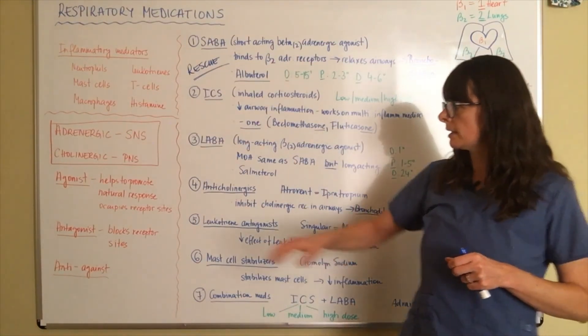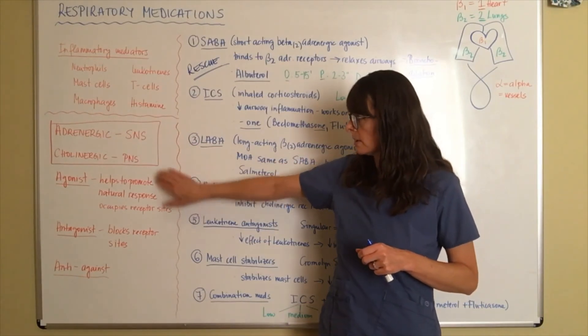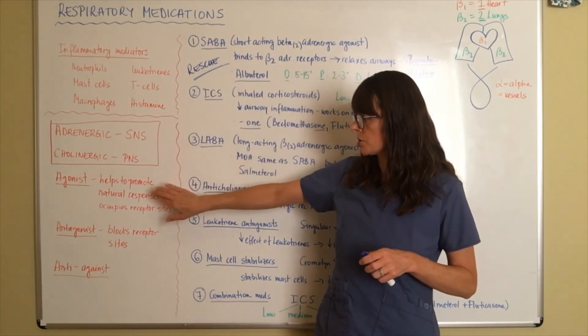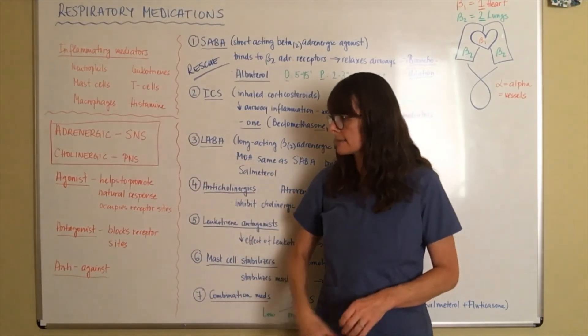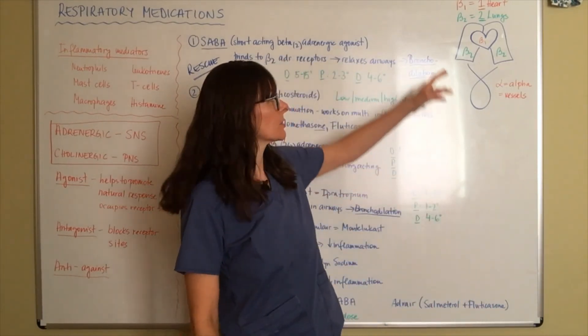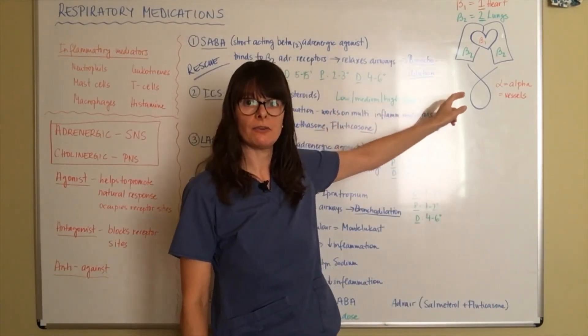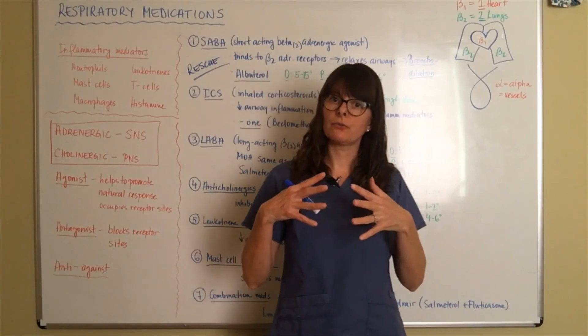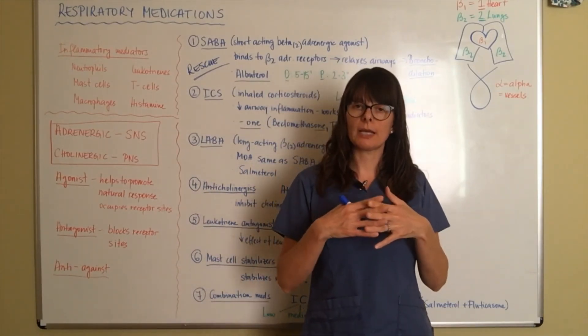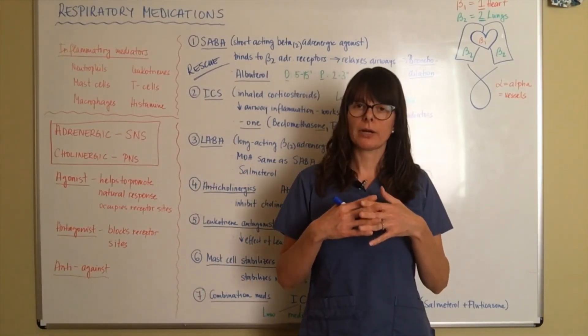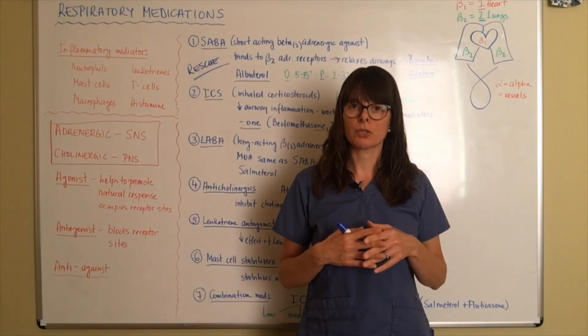So I would recommend that you memorize this: adrenergic, cholinergic, agonist, antagonist, as well as the receptors beta-1, beta-2, and alpha. That way you can kind of combine these terms and know what's going on to kind of dissect the meaning of these respiratory medications.